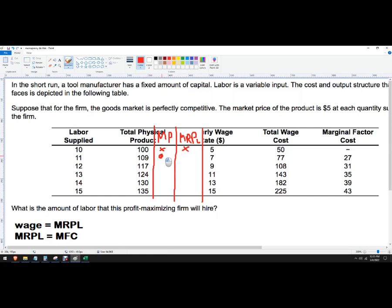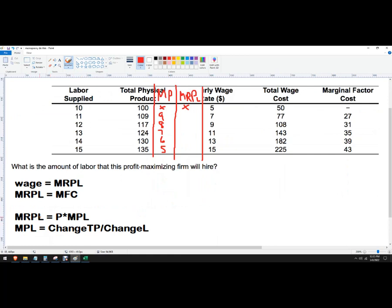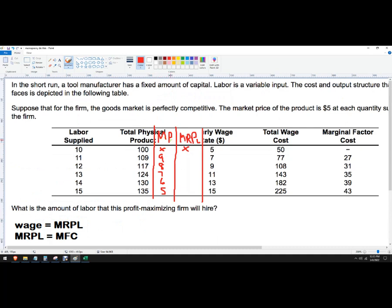So from here to here that's 9, here to here that's 8, 7, 6, 5. Now I'm going to multiply to get marginal revenue product - I'm going to multiply price times that marginal product of labor.